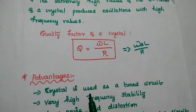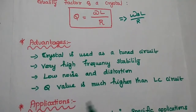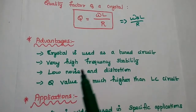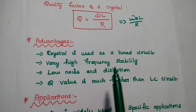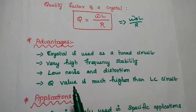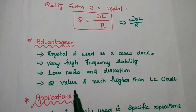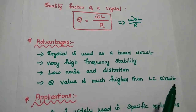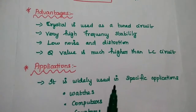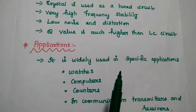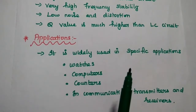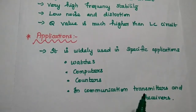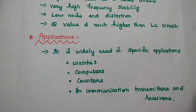Major advantages of crystal oscillators: the crystal is used as a tuned circuit, it has very high frequency stability, low noise and distortion, and its Q value is much higher than a normal LC circuit. Applications include watches, computers, counters, as well as communication transmitters and receivers.